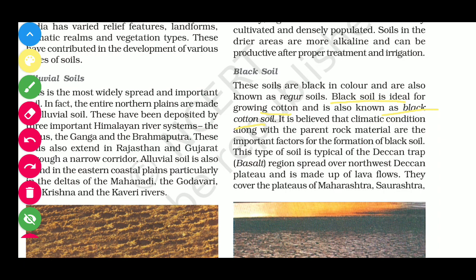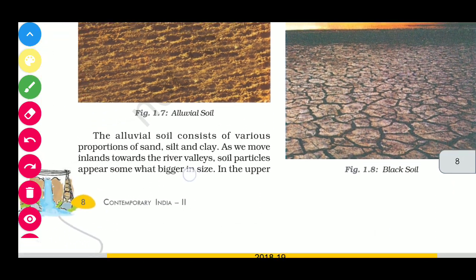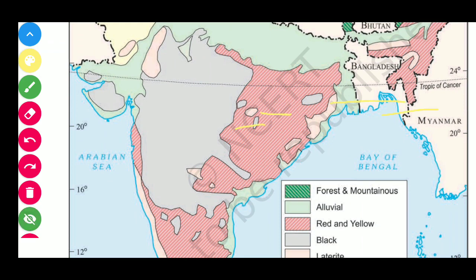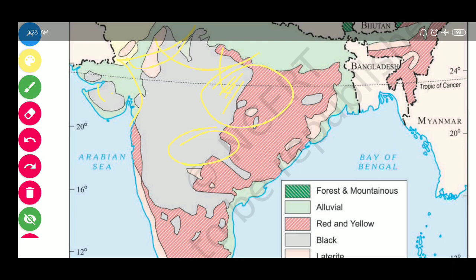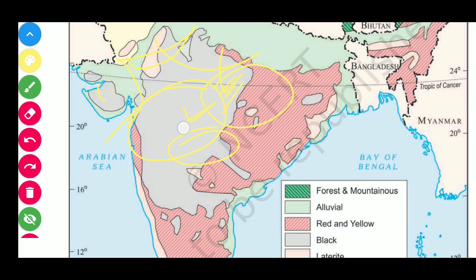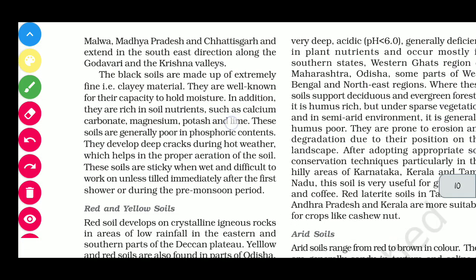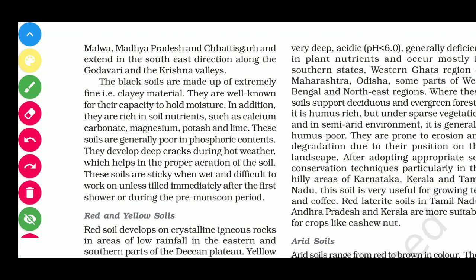This type of soil is typical of the Deccan Trap. They cover the plateau of Maharashtra, Saurashtra, Madhya Pradesh, Gujarat, some part of Rajasthan, UP, Chhattisgarh, and extend in the south-east direction along the Godavari and Krishna Valleys.